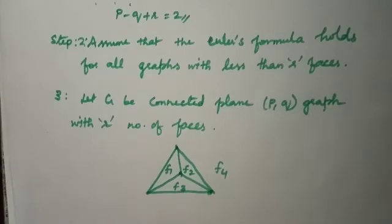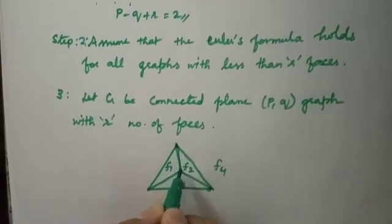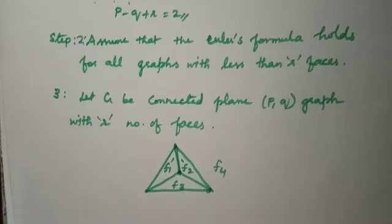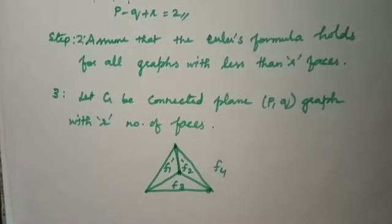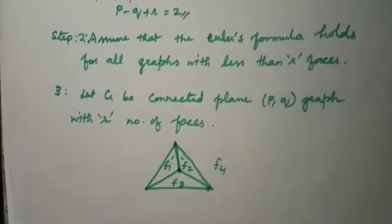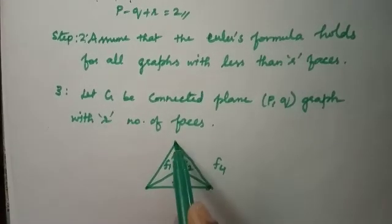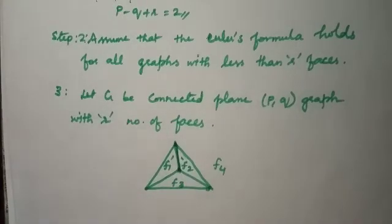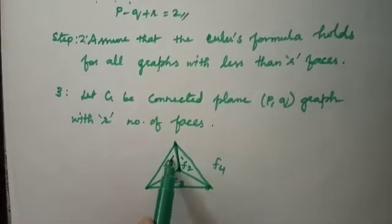Since the graph has R faces, if you look at a cycle, you can find an edge on the boundary shared by two faces. This edge must be a non-cut edge — that is, it is not a bridge. So we can choose one edge that lies on the boundary of two faces, and this edge is a non-cut edge.